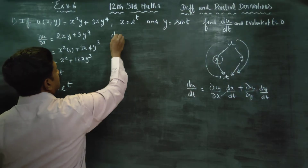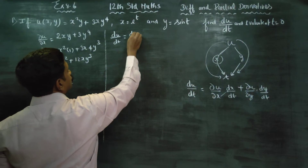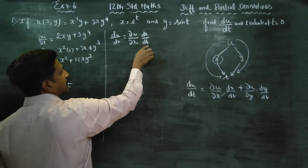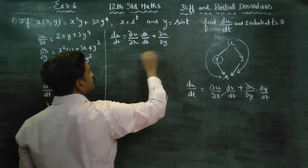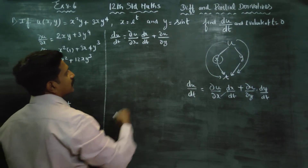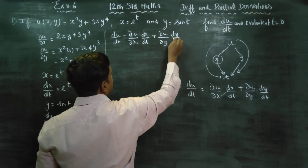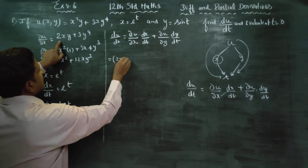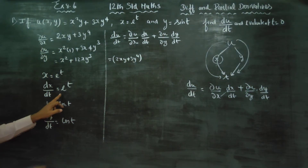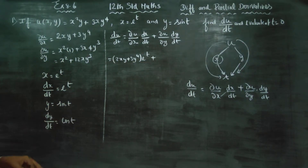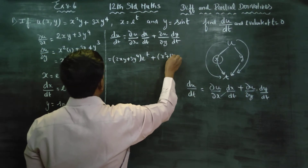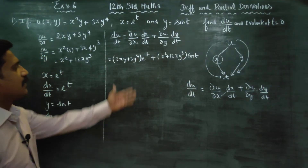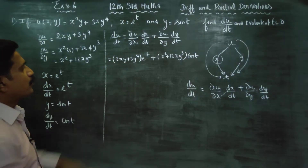Now applying our formula: du/dt = (∂u/∂x)(dx/dt) + (∂u/∂y)(dy/dt). Substituting: (2xy⁴)(dx/dt) + (∂u/∂y) chain rule — since x and y are two variables. So: (2xy⁴)(e^t) + (x² + 12xy³)(cos t).